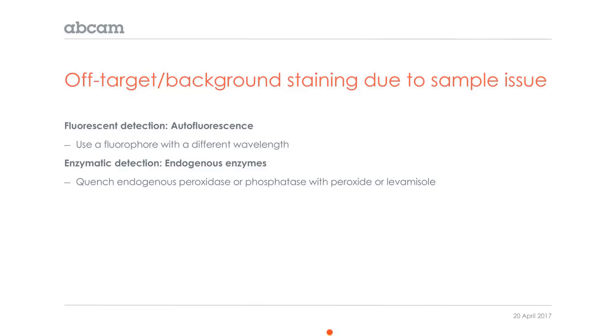But if you do see some activity, the control would be to simply put some substrate onto a slide. If you see staining, you'll need to quench it with peroxide, or for phosphatase, with levamisole.